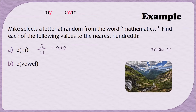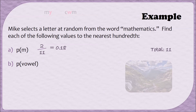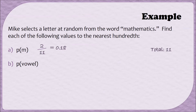To find the probability that Mike would select a vowel at random from the word mathematics, first we count up how many vowels there are. It looks like there are four vowels: two A's, an E, and an I, so those become the numerator. There are still 11 letters total, so the denominator is still 11. When we carry out the division and round, we end up with 0.36.